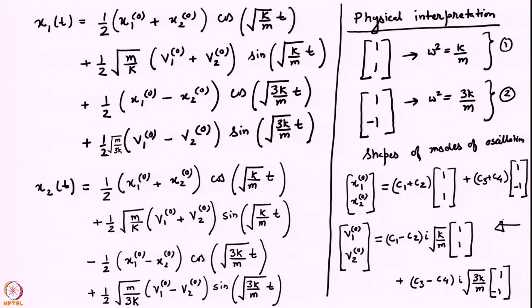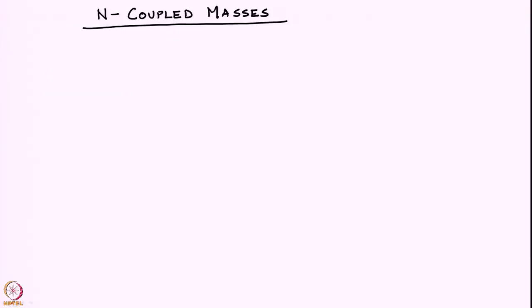With that quick summary, we will now continue to our next topic where we introduce n coupled masses. One essential difference between this example and what was done in the previous class is that in the previous class the equations of motion were inherently linear. Here, the equations of motion are inherently non-linear and we will have to do some linearization about the base state in order to render them linear.